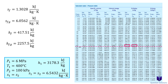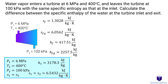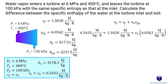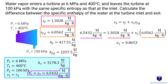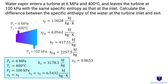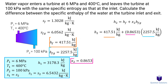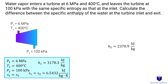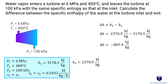Now let's use the entropy equation to figure out the quality. Plugging in our values and solving gives us the quality. To find the enthalpy at the second state, we can use this equation. Let's plug in our values and solve. Now that we have both enthalpy values, all we need to do is find the difference. Solving gives us the change in enthalpy.